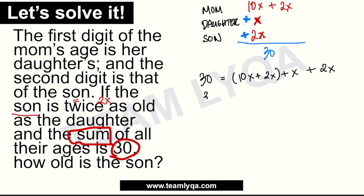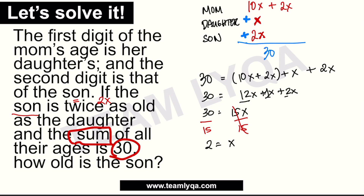Combining like terms: 30 equals 10x + 2x = 12x, plus x, plus 2x. So 30 equals 12x + 1x + 2x = 15x. To isolate x, we divide both sides by 15. 30 divided by 15 is 2, so x equals 2.